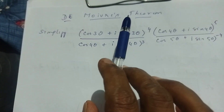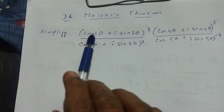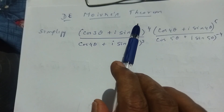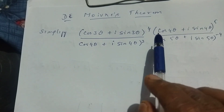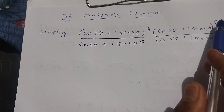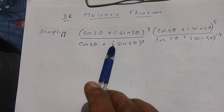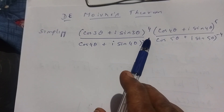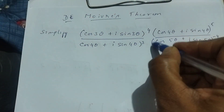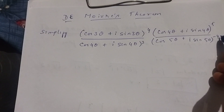Apply De Moivre's theorem to simplify: (cos 3θ + i sin 3θ)^4 × (cos 4θ + i sin 4θ)^5, divided by (cos 4θ + i sin 4θ)^3 × (cos 5θ + i sin 5θ)^(−4).